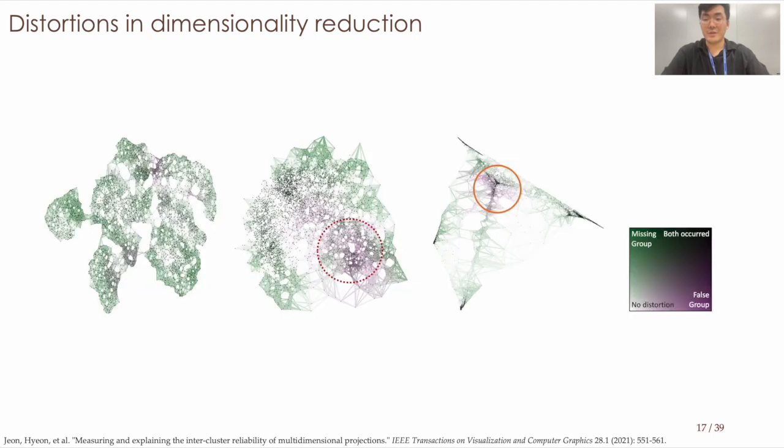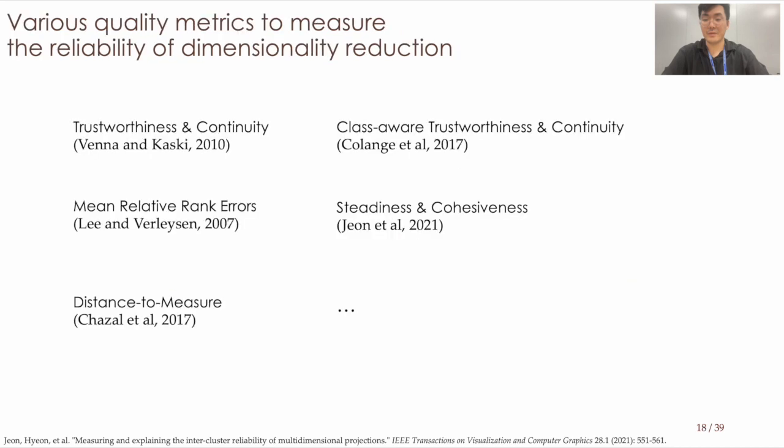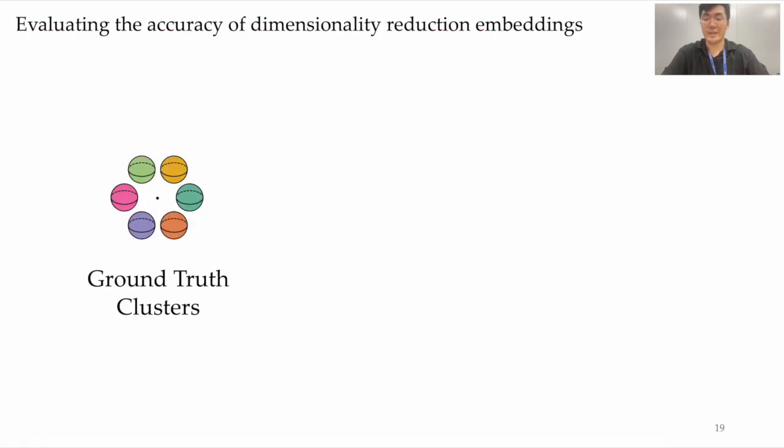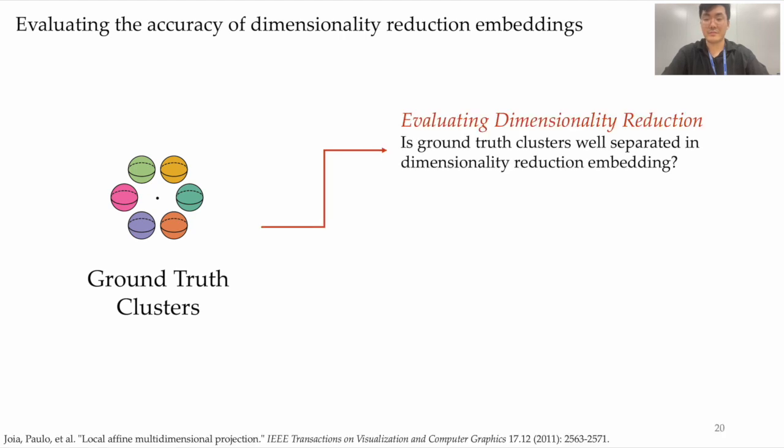This visualization demonstrates that both missing and false group distortions commonly happen. The circled area, for instance, showcases false group distortions, implying the points within the circles are denser than in reality. Given these distortions, numerous metrics to evaluate the accuracy of dimensionality reduction have been proposed. Among them, we will now especially spotlight the metrics which utilize ground-truth clusters to gauge the reliability of such reductions.